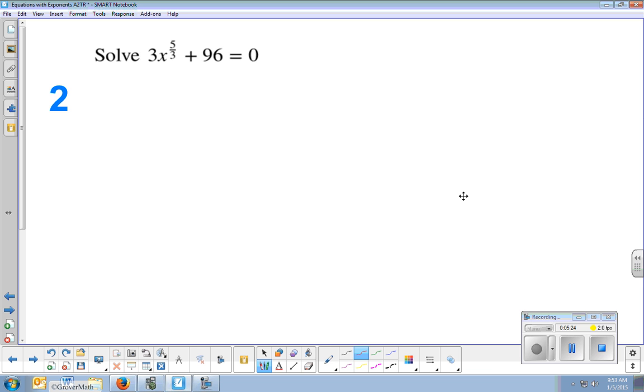All right, so let me just grab a pen here. Sorry, my tablet's kind of jumping around. All right, let's go. So first, just if it was 3x plus 96 equals 0, what would you do?